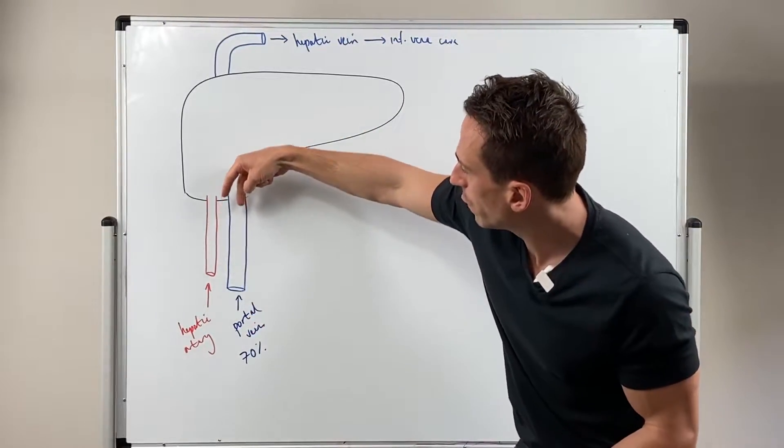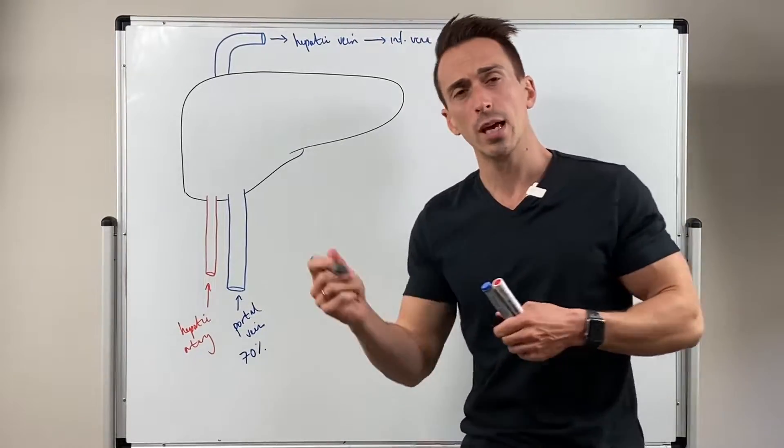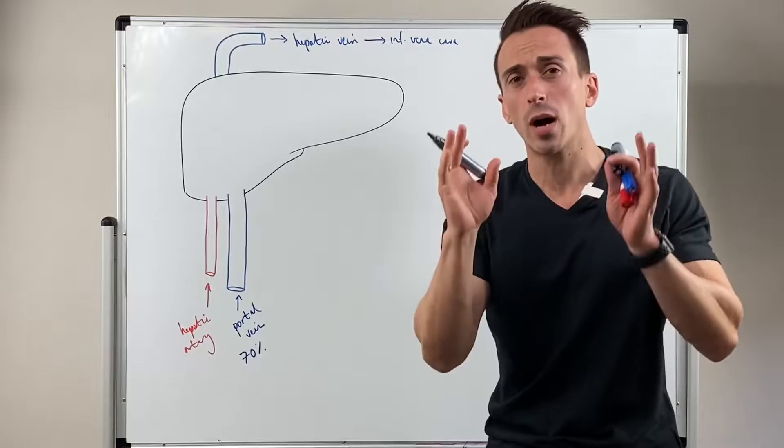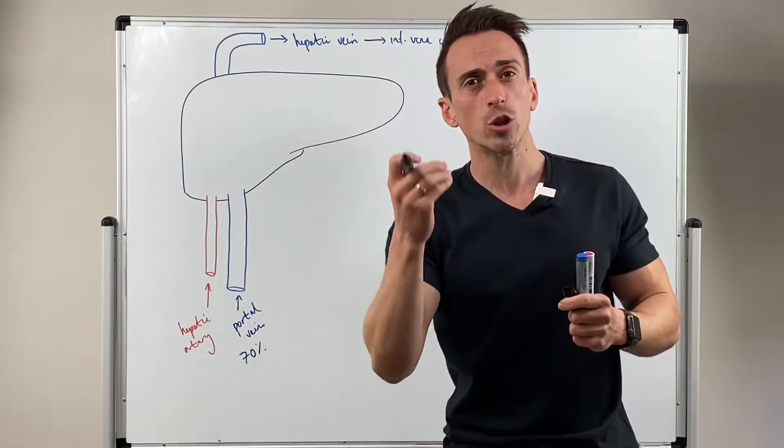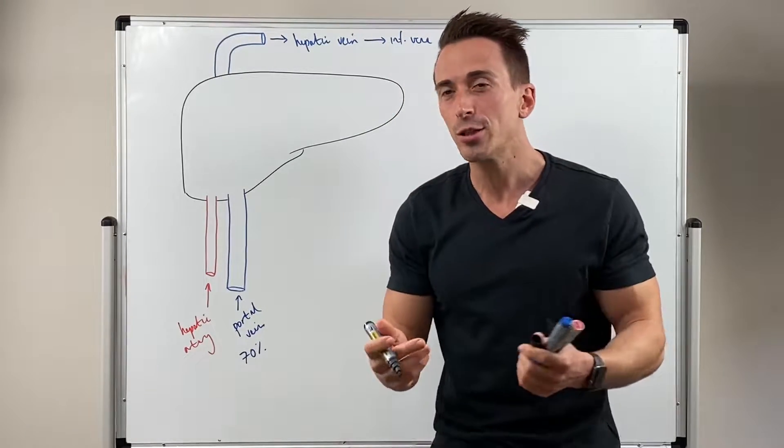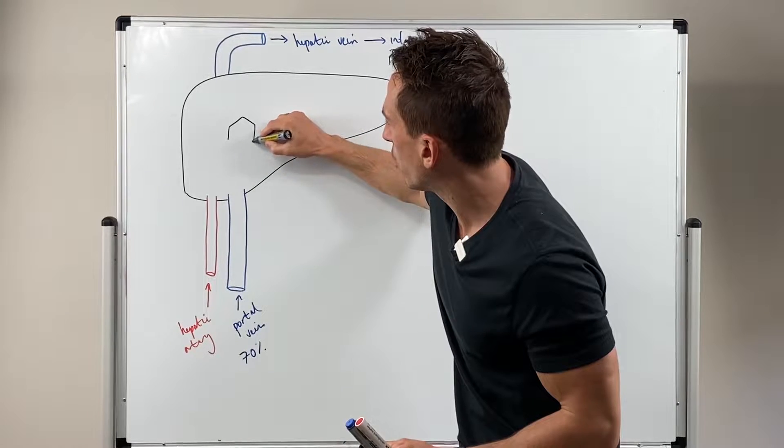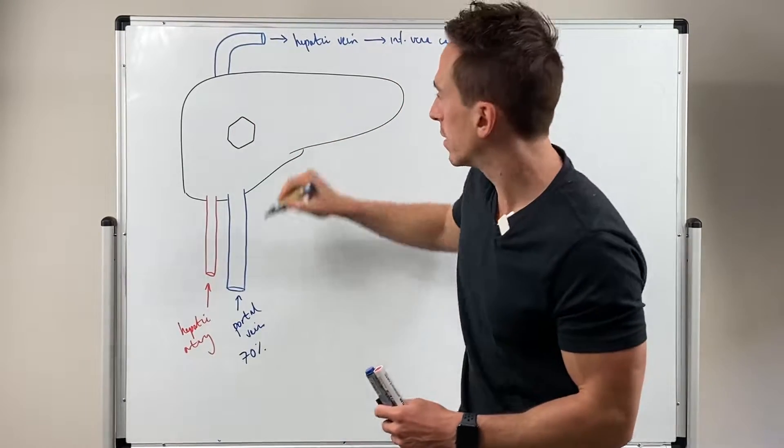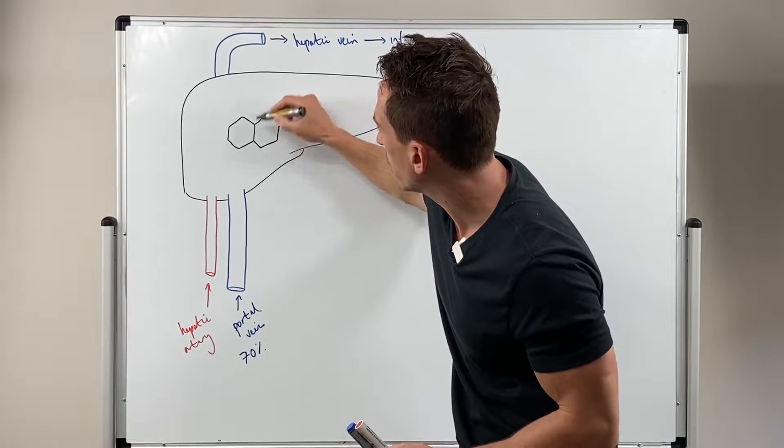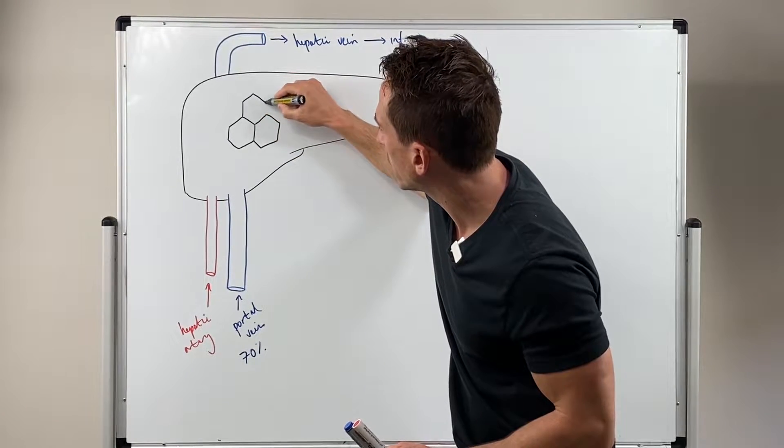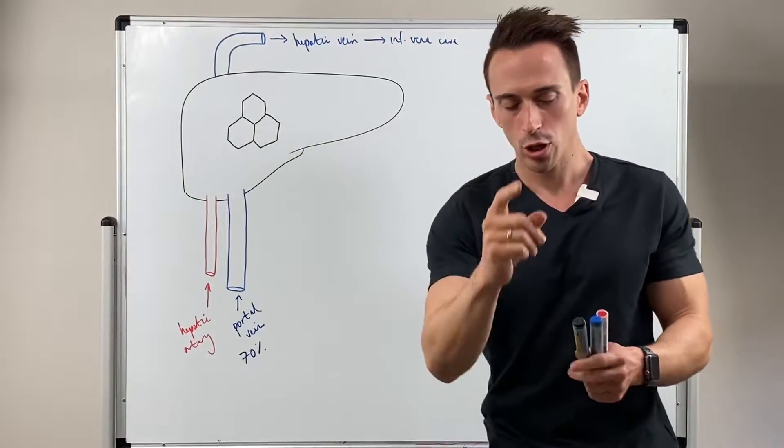What happens to these two vessels when they enter the liver? The liver is comprised of what we call lobules, and there's between 50,000 to 100,000 lobules in the liver. The lobules are the functional units and they're hexagonal in shape: one, two, three, four, five, six sides. You've got all these hexagonal-shaped lobules throughout the liver doing all the work.